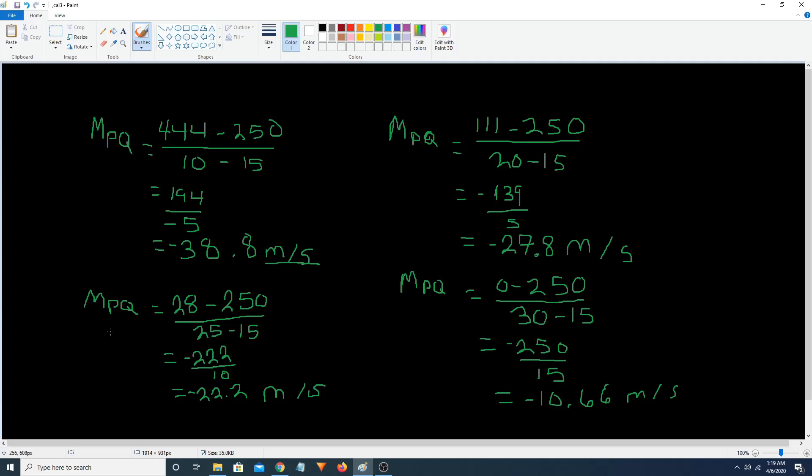And then right here we have our third slope of the secant length. Which equals 28 minus 250 divided by 25 minus 15. Which equals negative 222 divided by 10. Which equals negative 22.2 meters per second.